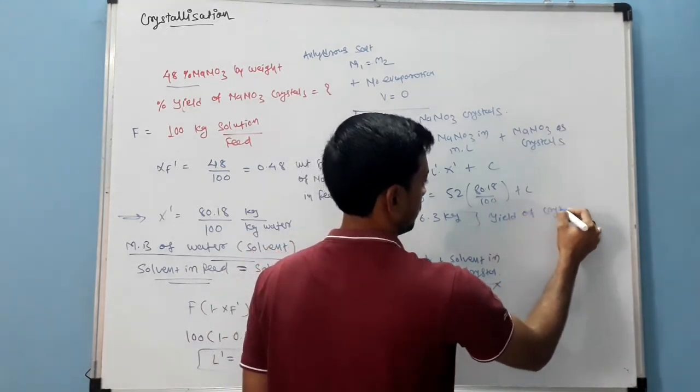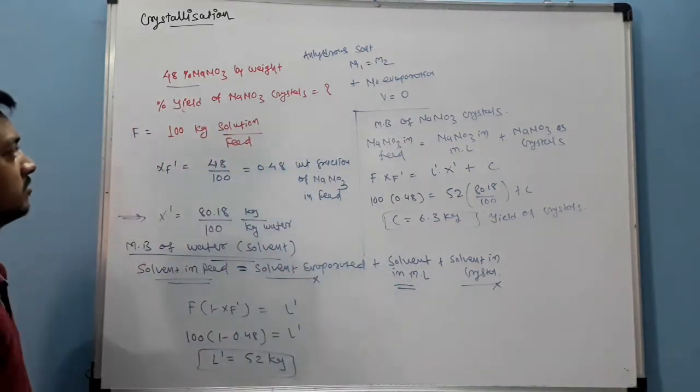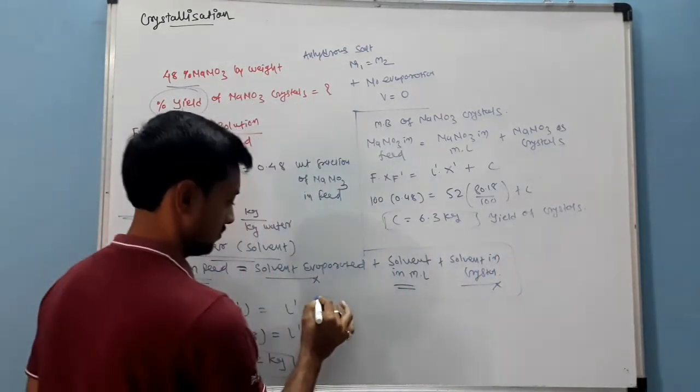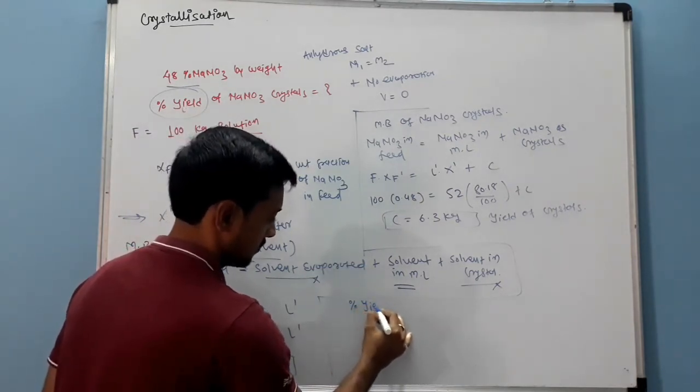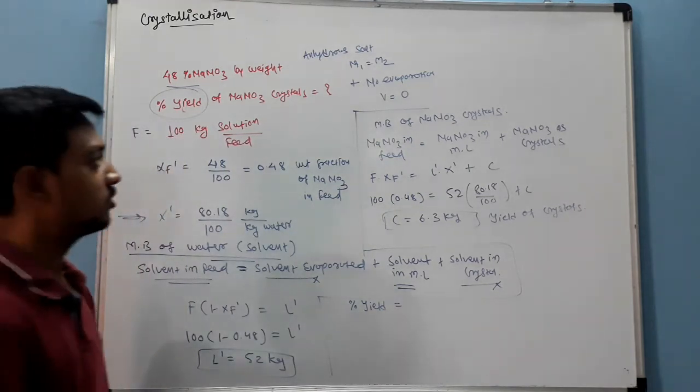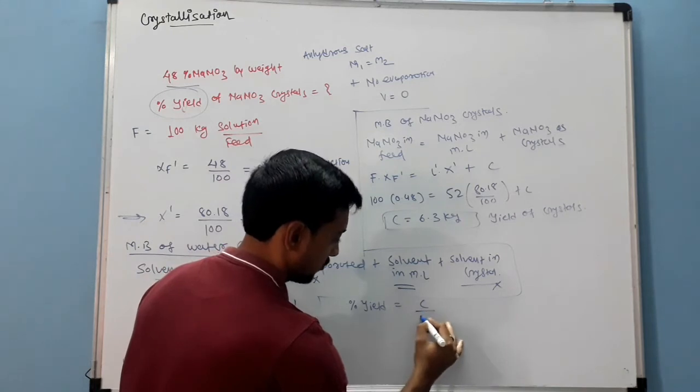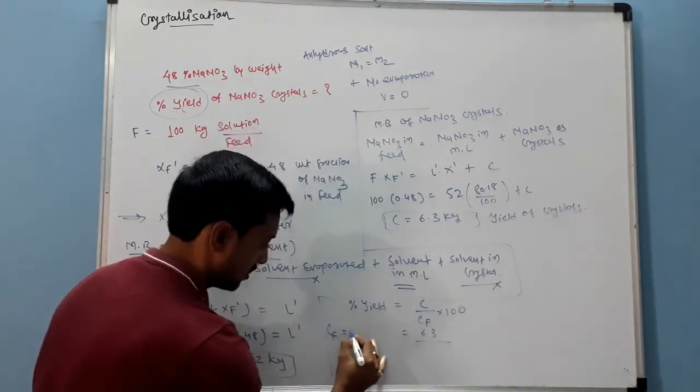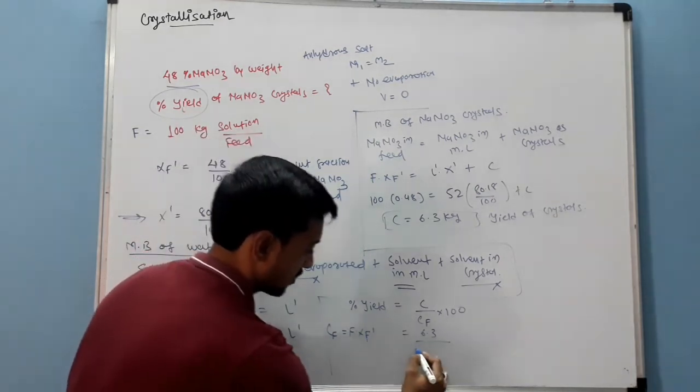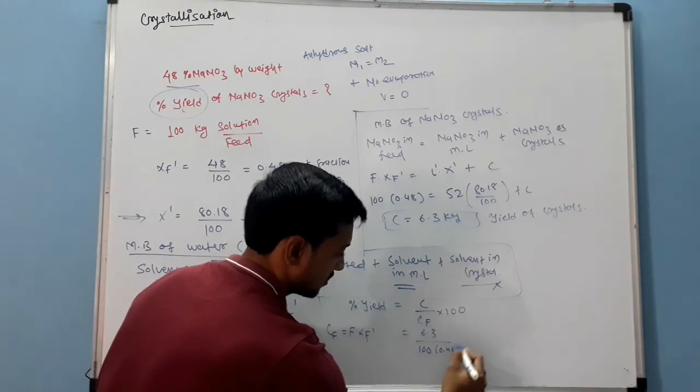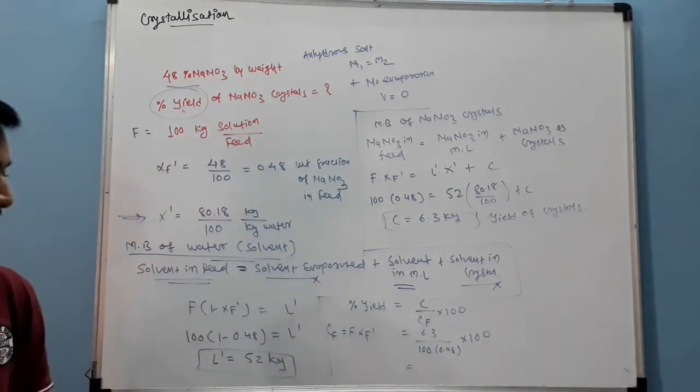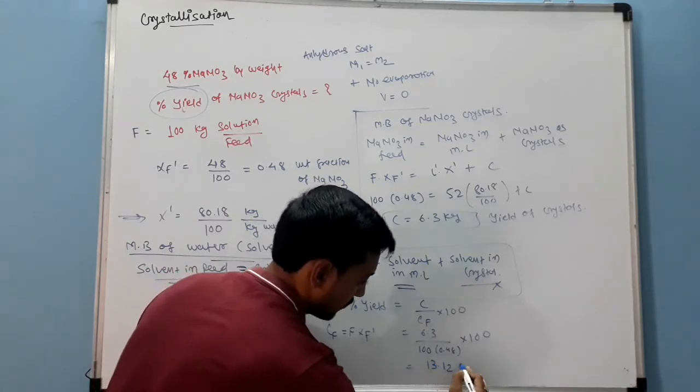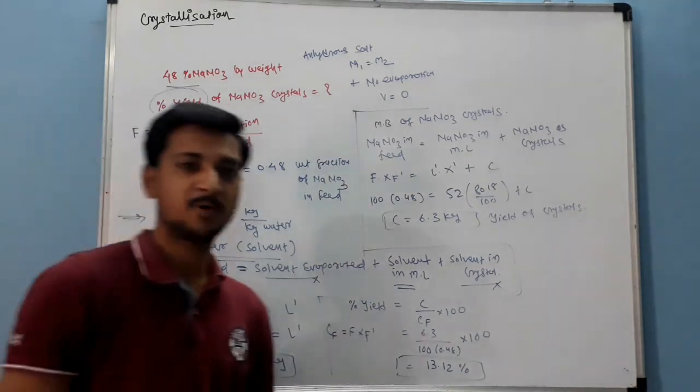Now we have to find out percentage yield. Percentage yield is equal to kg of NaNO3 crystallized, that means C upon CF into 100. C is 6.3, CF is equal to F into XF dash, so 100 multiplied by 0.48. By solving this, 6.3 divided by 48 multiplied by 100, it gives 13.12%.